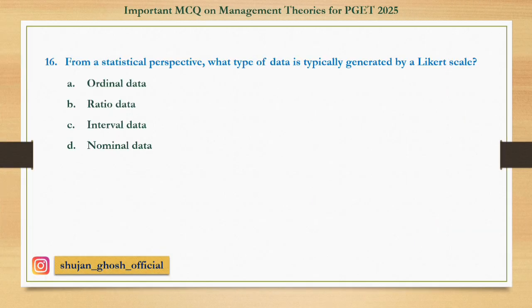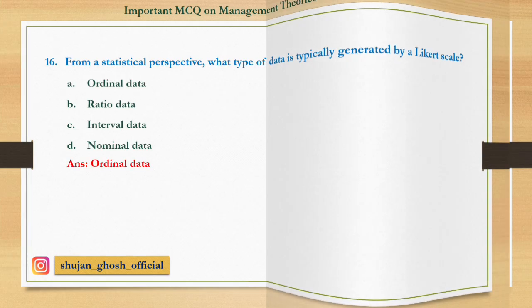Question number 16: From a statistical perspective, what type of data is typically generated by a Likert scale? Option A: Ordinal data. B: Ratio data. C: Interval data. D: Nominal data. Answer is Ordinal data.